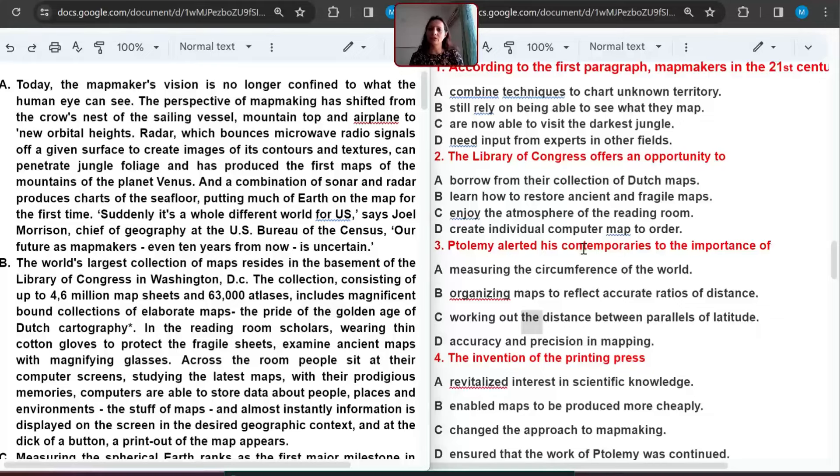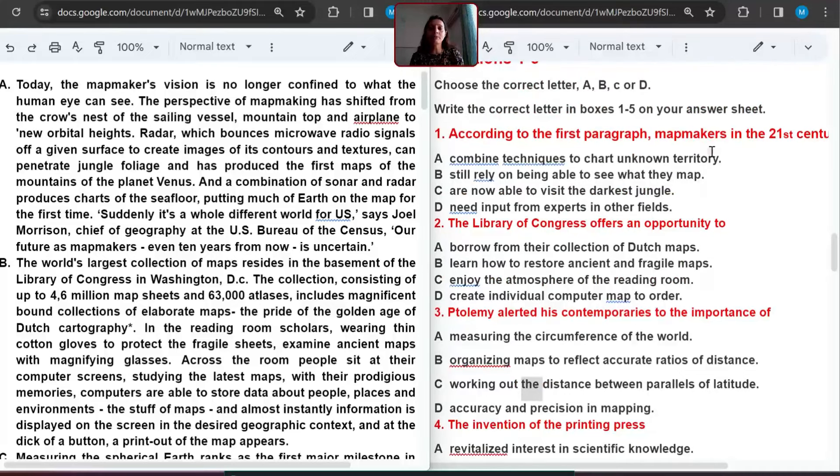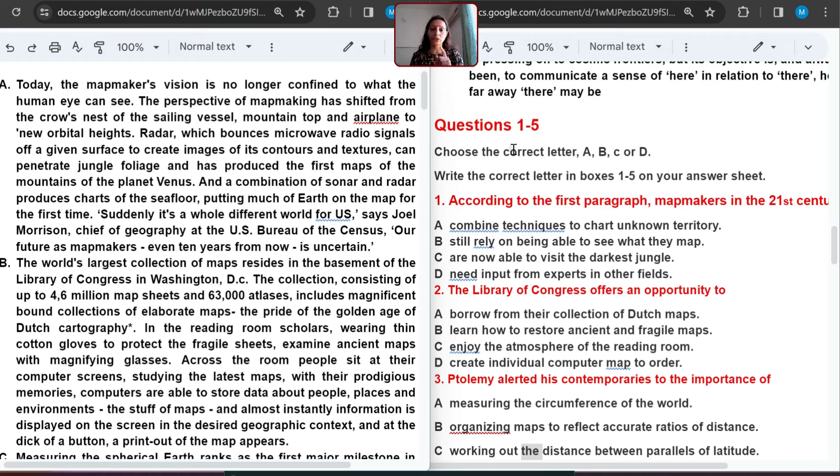Let's start with first, that is map activity. So according to the first paragraph, mapmakers in the 21st century. How to do this multiple choice question? It's important. You should know the strategy of these questions. Definitely first, we will read the question statement and underline the important keywords. But location is already given by the examiner - first paragraph. So mapmakers is the keyword, and 21st century is also important.